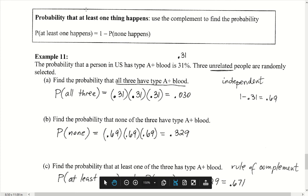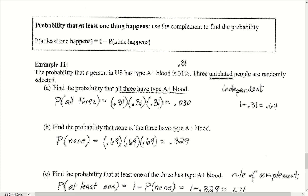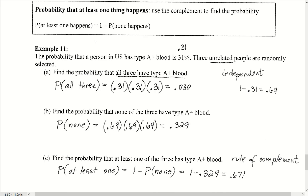We finish section 3.2 by revisiting a specific case of the complement rule. The probability of the complement of an event equals 1 minus the probability of the event. For the 'at least one' event, direct counting can be complicated since it can happen in many ways. However, the complement of 'at least one' is 'none,' which is often a much easier calculation. So we compute: P(at least one) = 1 − P(none). This is called the at least one rule.